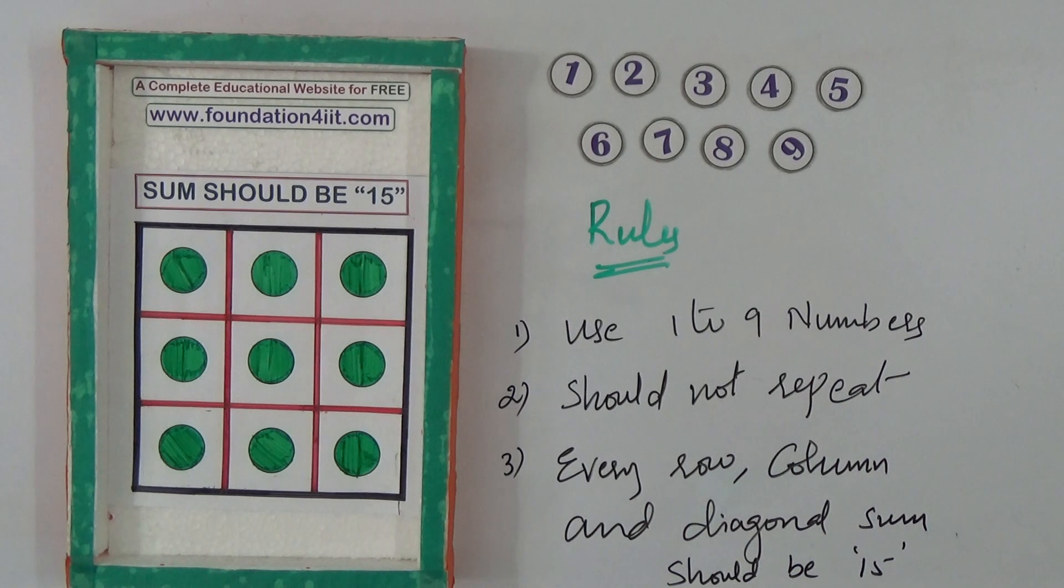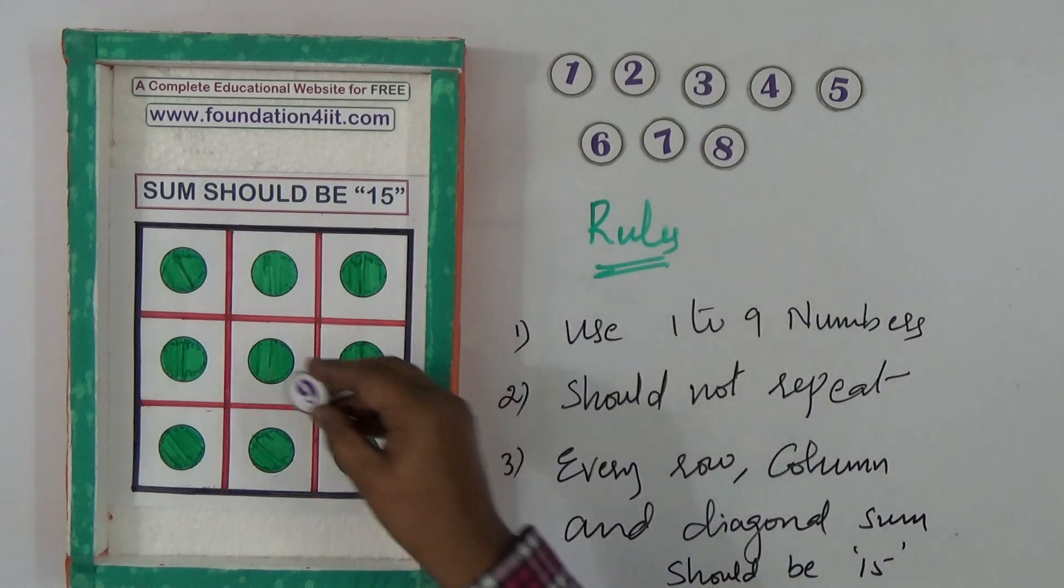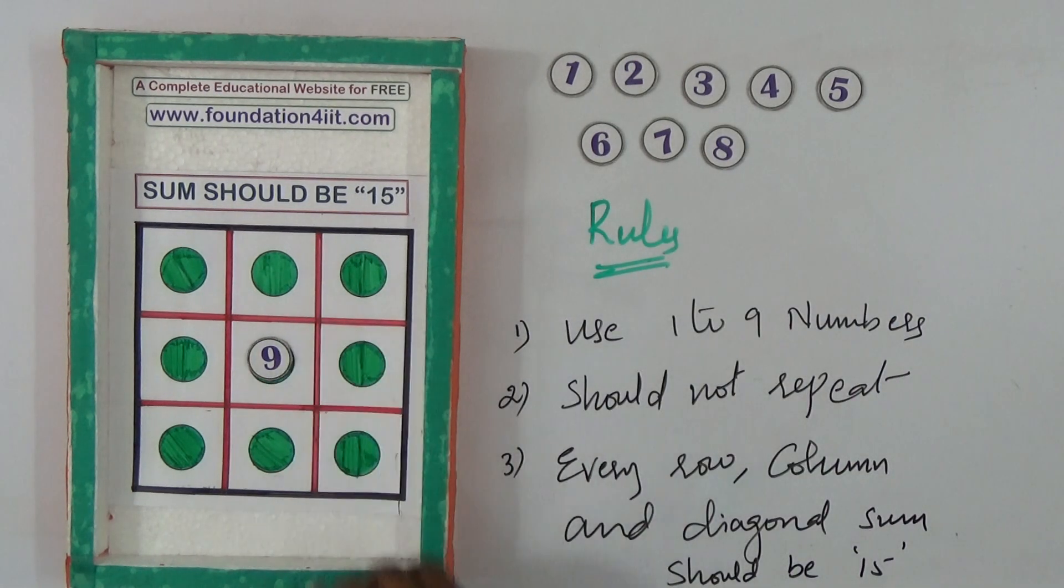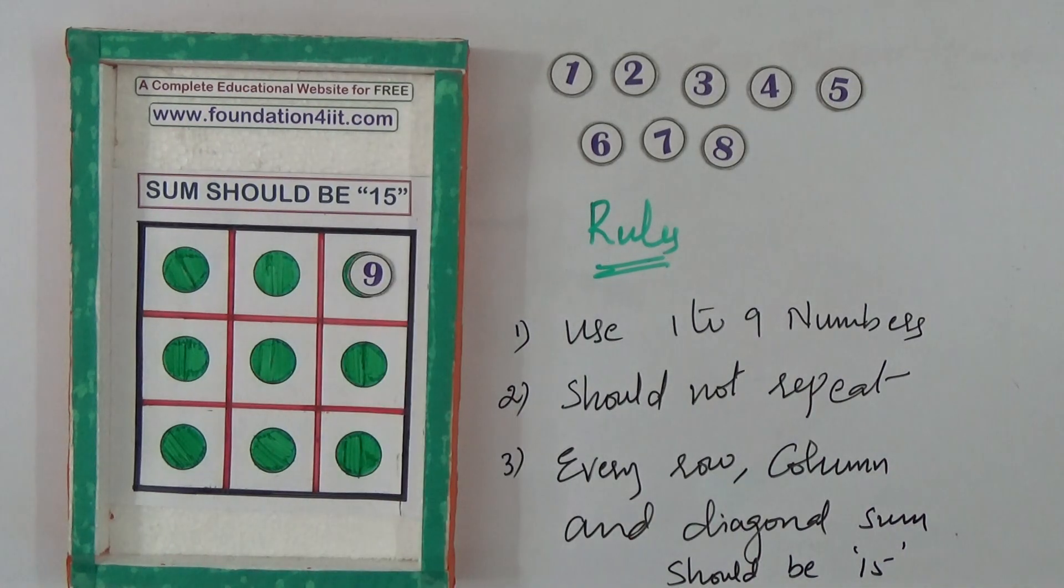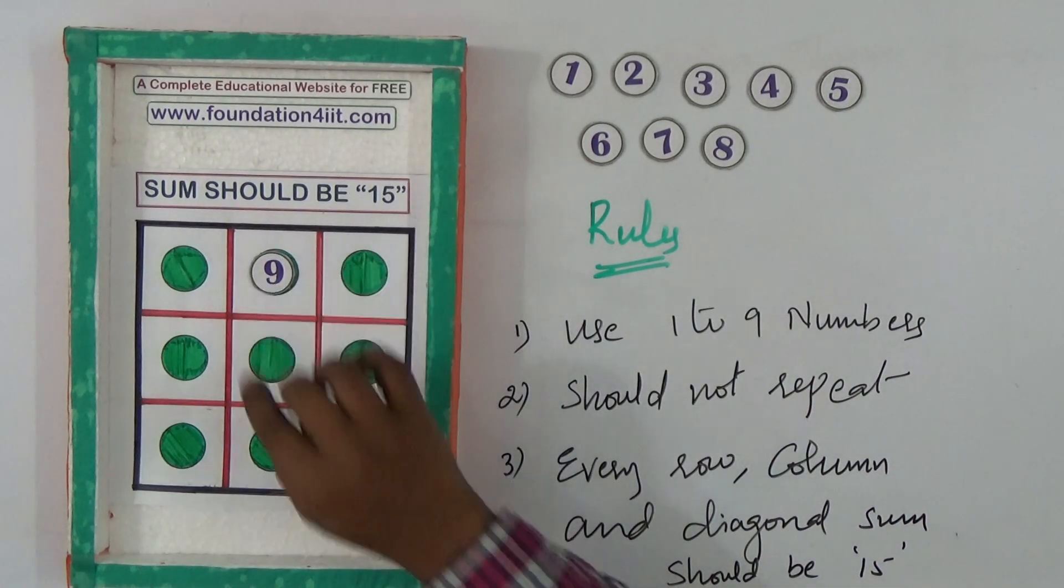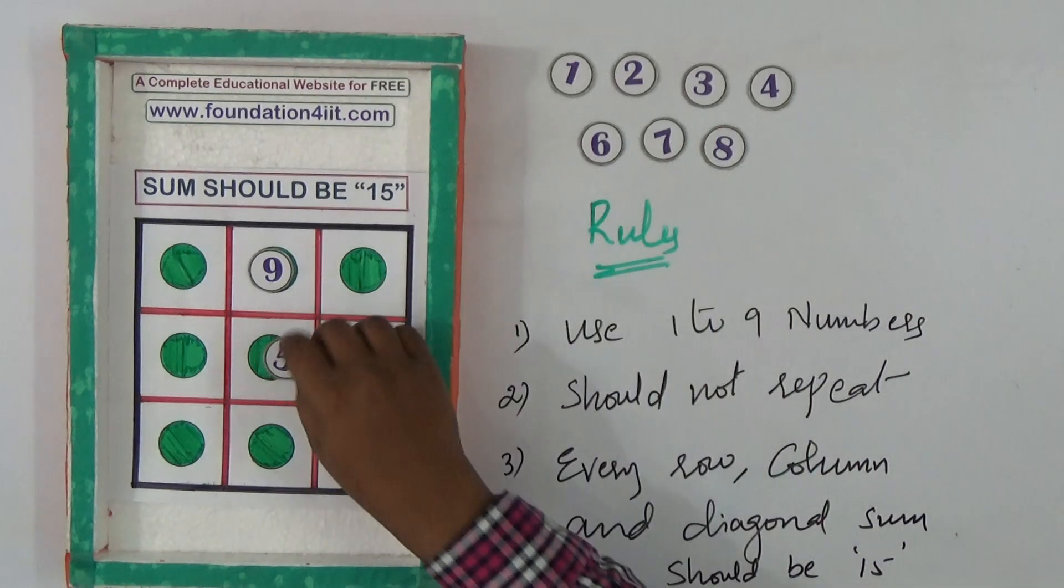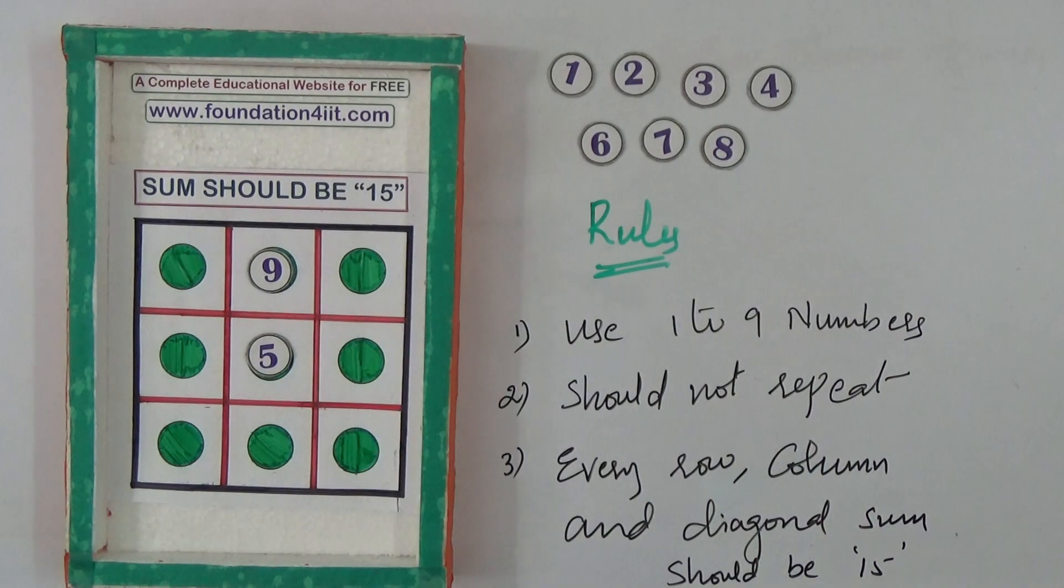For example, if I keep 9 here, 9 should be in another place. Using only 1 to 9 numbers. Let me first explain the solution and how to remember the solution also.